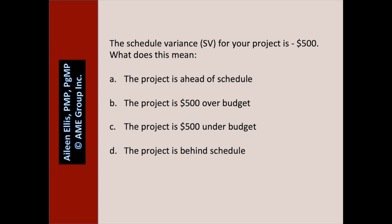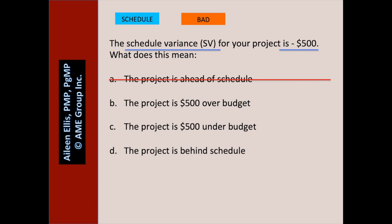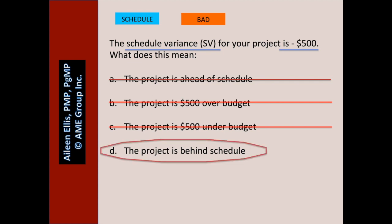The schedule variance for your project is negative $500. What does this mean? Pause the video and answer the question. Is this about schedule or cost? It's about schedule. Negative $500 — is that good or bad? That's bad. A: the project is ahead of schedule — no, because A is a good thing. B and C address over and under budget — we have no idea because we're talking about schedule variance. D: the project is behind schedule — yes. I hope that was an easy question.